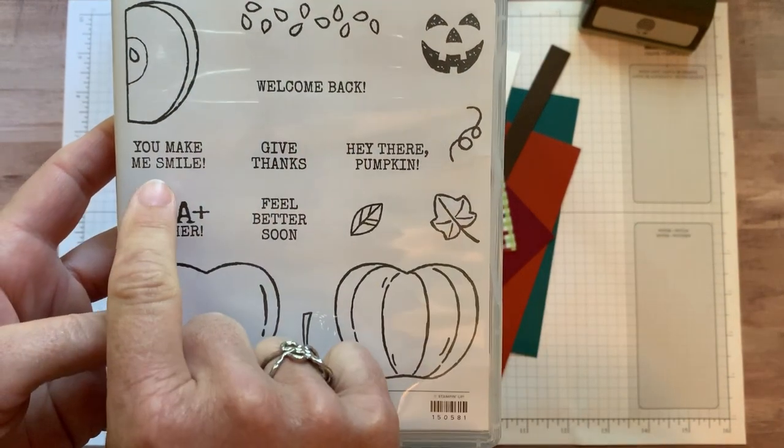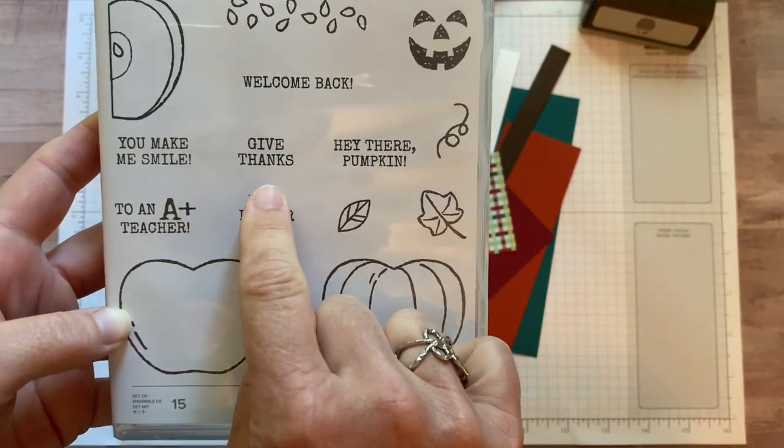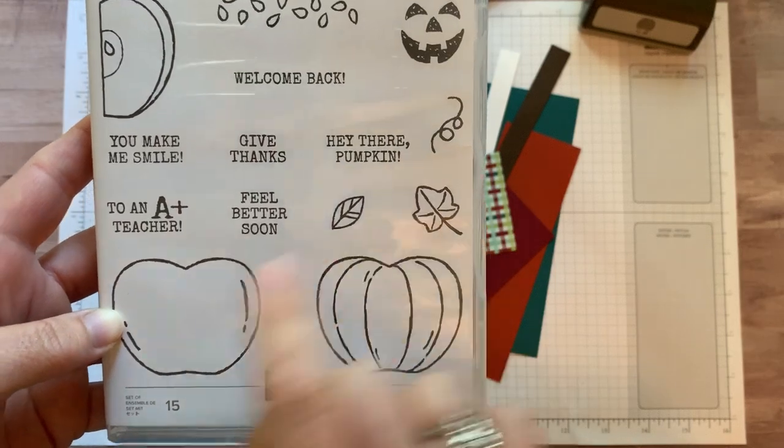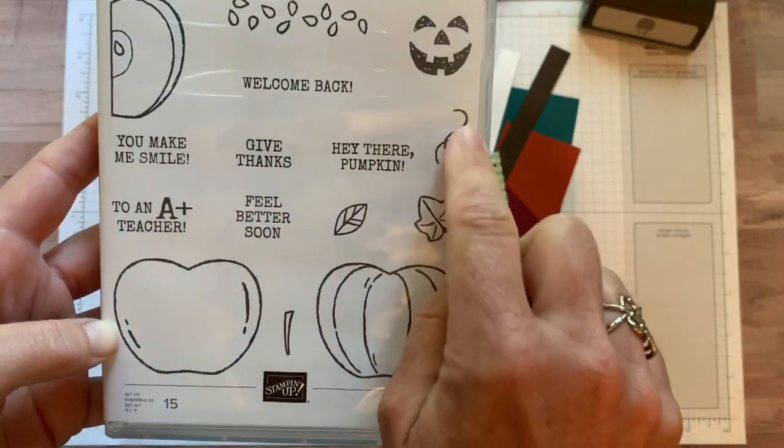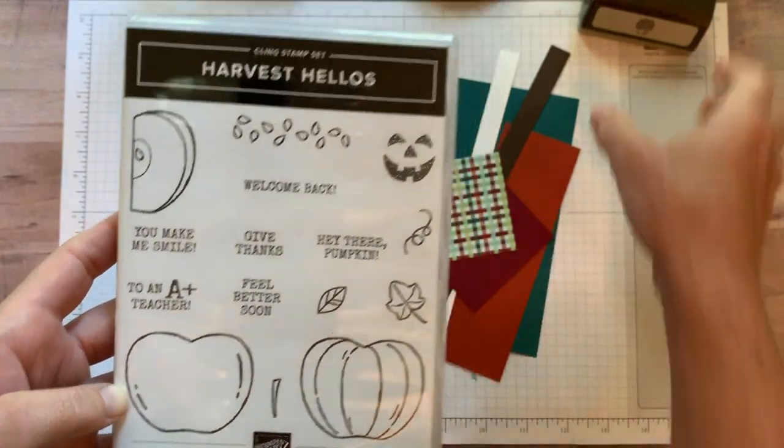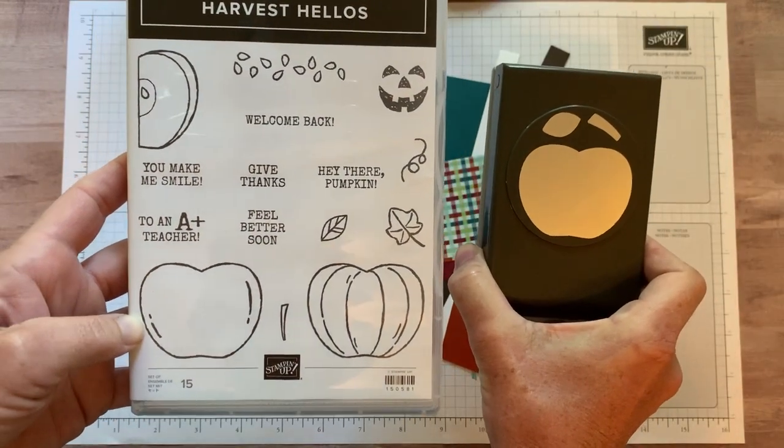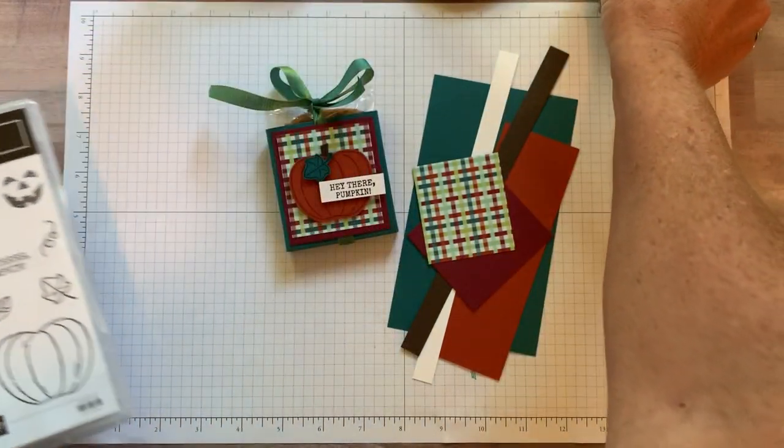There are really fun sentiments in this stamp set too. We've got welcome back, you make me smile, give thanks, hey there pumpkin, to an A plus teacher and feel better soon. And then some other fun imagery in there as well. We've got that punch that works perfectly with the apple and the pumpkin there. You can get those in a bundle too.